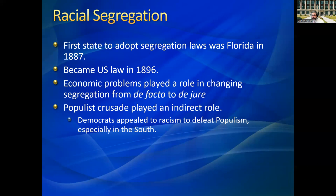It's not a coincidence that segregation laws start cropping up at the same time the Populists — who had integrated their party and were calling for all sorts of changes — were rising. Race was used to drive a wedge within the Populist Party and stop their rise to power. Ultimately, we see a change from de facto segregation — a matter of custom, where certain people don't live in certain areas — to de jure segregation by 1896, meaning the laws themselves encapsulate segregation. The Populists played an indirect role: by appealing to broader economic problems and saying white and black share a similar problem, Southern Democrats used race as a wedge issue to divide Southern farmers.